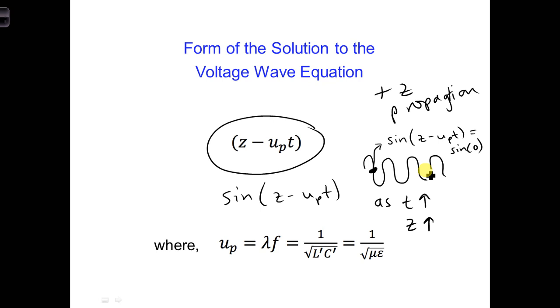Now I said that u sub p, up here is the phase velocity, where up is equal to, here's a few different forms of it. You can get it from lambda f. It's also equal to one over square root of l prime c prime for a lossless transmission line.